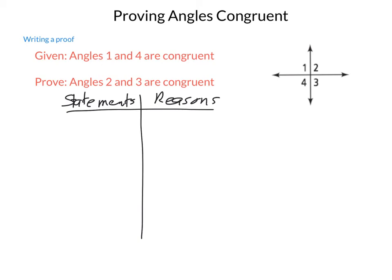And on the right, we give our reasons. We're going to start out with what's our known information. That is, angle 1 is congruent to angle 4.